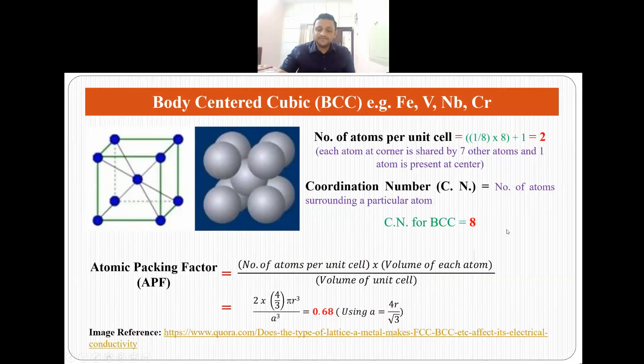The BCC or body centered cubic system has 8 atoms at the corners and 1 atom at the center. The total number of atoms per unit cell is 1/8 times 8, since each atom at corner is shared by 7 other atoms, so the effective contribution of each atom at corner is 1/8. The total number of atoms per unit cell is 1/8 times 8 plus 1. This atom is present at the center and the total number of atoms is 2.